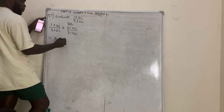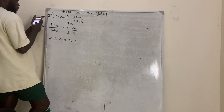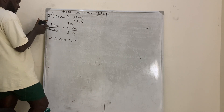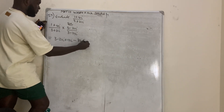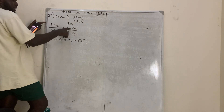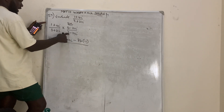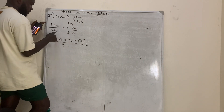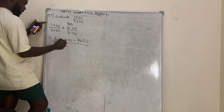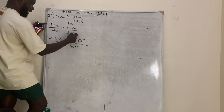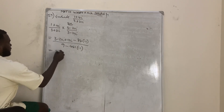Expanding the numerator: 1 times 3 is 3, 1 times −21i is −21i, 4i times 3 is 12i, and 4i times −21i gives −84i². Since i² = −1, that becomes +84. So the numerator is 3 plus 84, which gives 87.